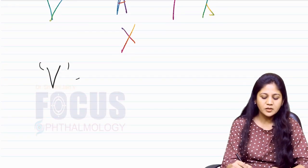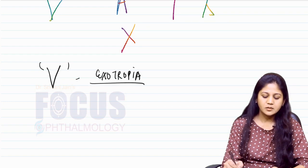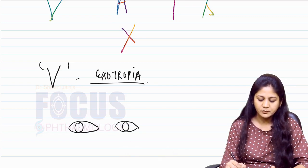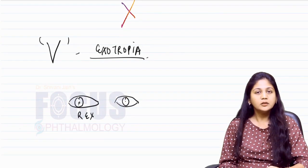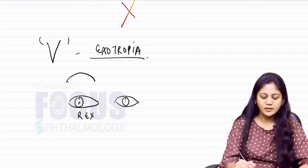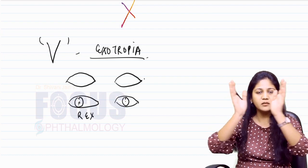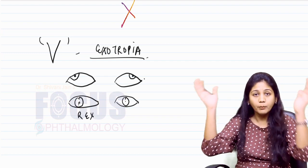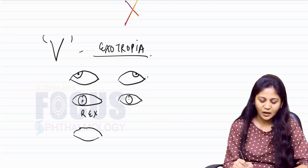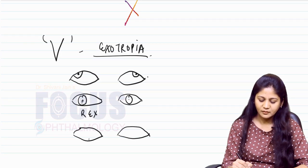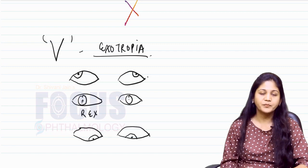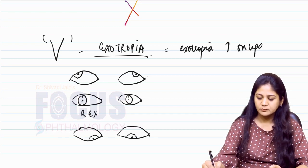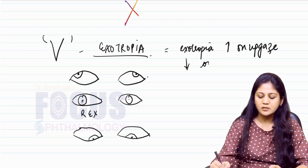Let us talk about the V pattern in exotropia. In some patients, you have exotropia in primary gaze. As the name suggests 'V', the moment the patient looks up, there is an increase in the exotropia — the eyeball is going up and out more. The moment the patient looks down, there is a decrease in exotropia. So, V pattern exotropia means exotropia increases on up gaze and decreases on down gaze.